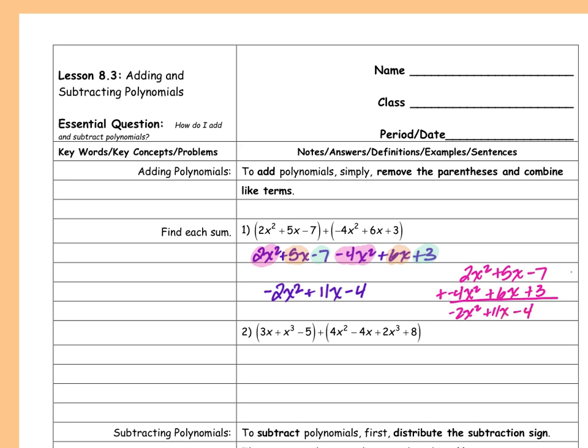A student asked about the first problem — specifically whether 5 plus 6 equals 11 or 12. Counting it out: 5 plus 6, counting 6, 7, 8, 9, 10, 11. Yes, it's 11. So the answer stays the same.